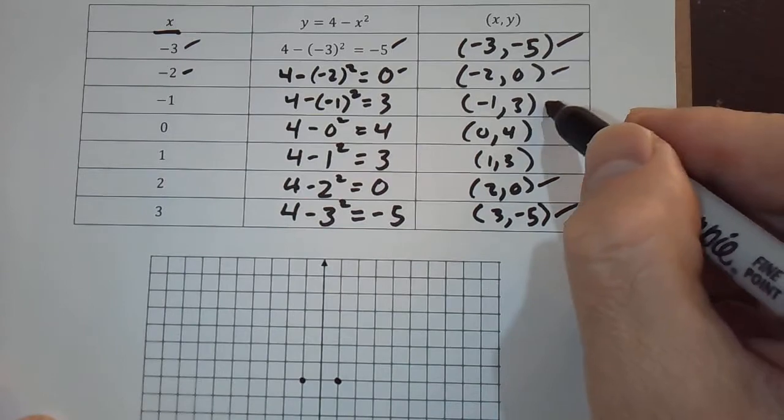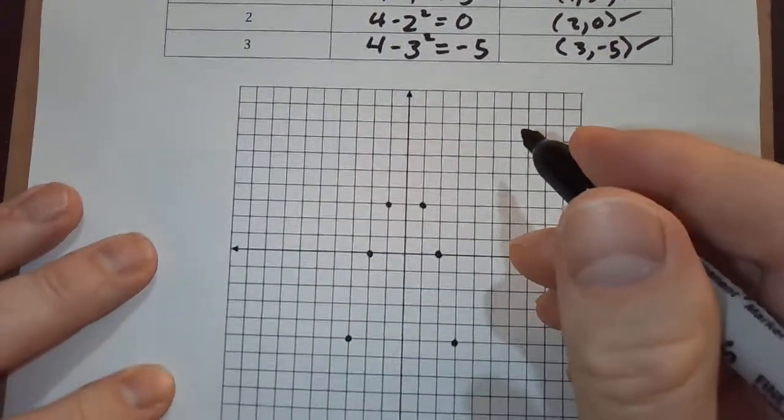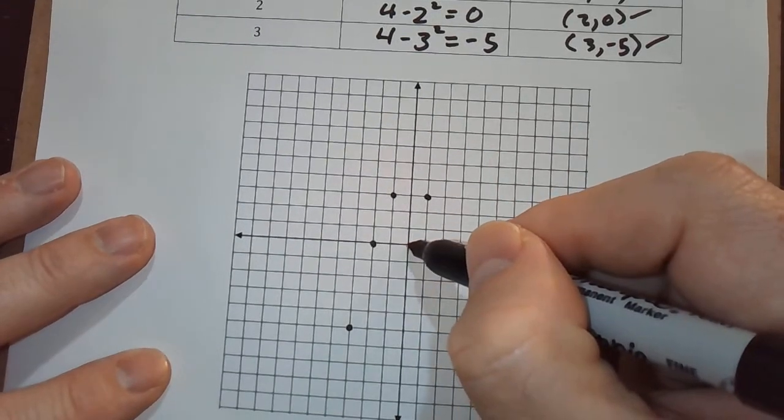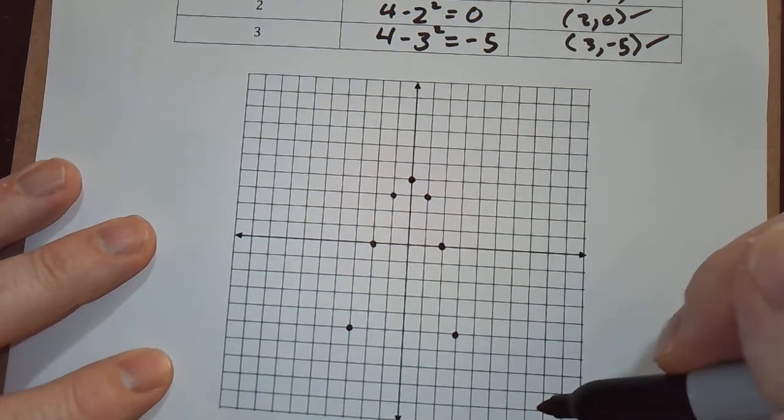And then the last point, the only one we have not done yet, is 0, 4. I'll go ahead and mark it off. 0 means go left or right 0, and then go up 4. 1, 2, 3, 4.